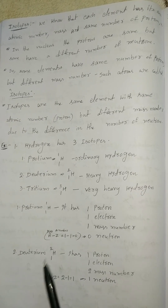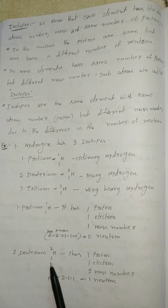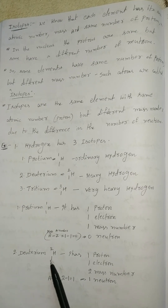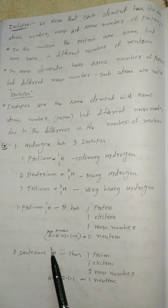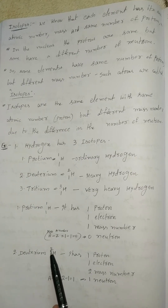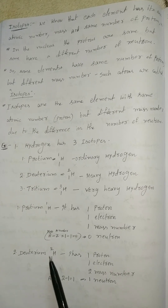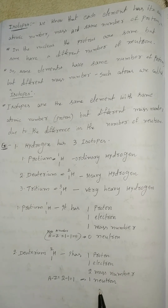Deuterium 1H2. In deuterium, atomic number is 1, one proton, one electron, and mass number is 2. Neutrons equal to A minus Z — mass number minus atomic number — so 2 minus 1 equals 1. Neutrons in deuterium is 1.